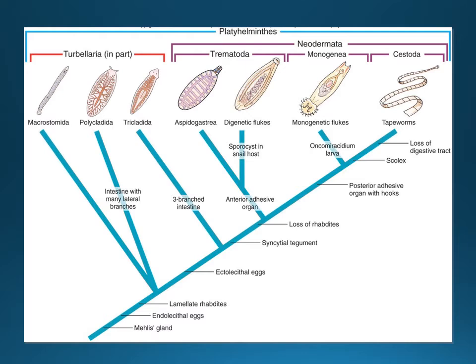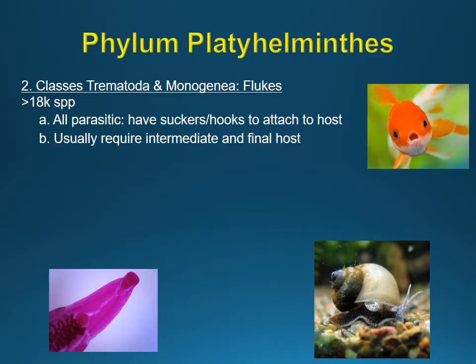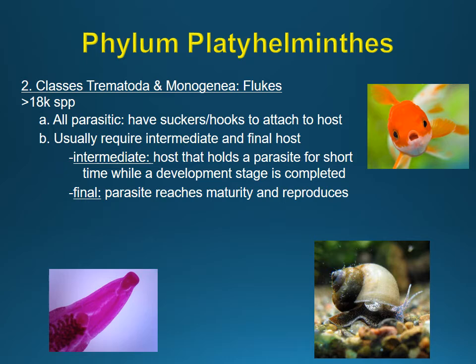Moving on with Platyhelminthes, we're going to look at the monogeneans and trematodes. These are parasites commonly called flukes. They'll attach to the host and sometimes get up inside the host - there are videos of them infesting a deer liver. They have intermediate and final hosts. The intermediate host just holds the parasite for a short time while it develops, but no reproduction occurs there. Reproduction occurs in the final host, where the parasite reaches full maturity. Sometimes we can be accidental intermediate hosts and get sick that way.